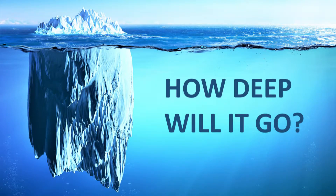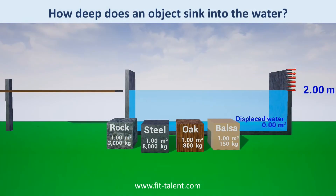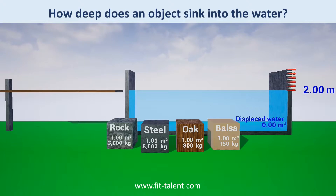How deep does an object sink into the water? Here we have several objects of the same size — each one cubic meter — made from different materials with different densities, which is the same as saying the same size cubes have different weights.